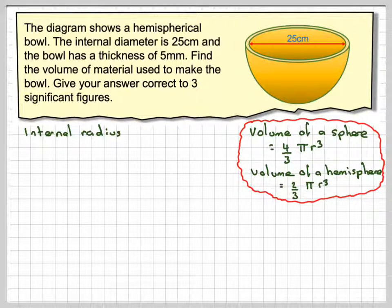So the internal radius will be 25 divided by 2, which is 12.5 centimeters, so from here to here, but not including the thickness is 12.5 centimeters.